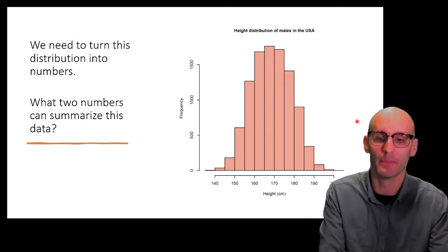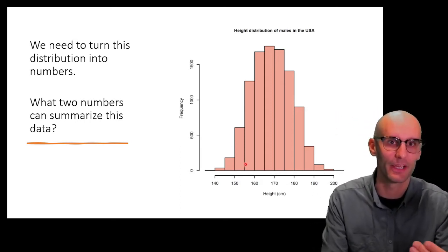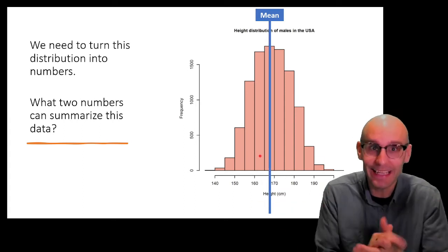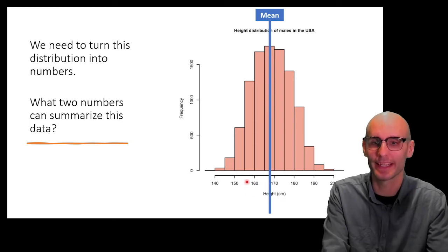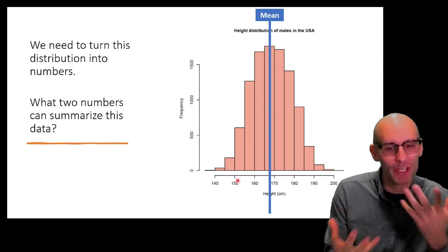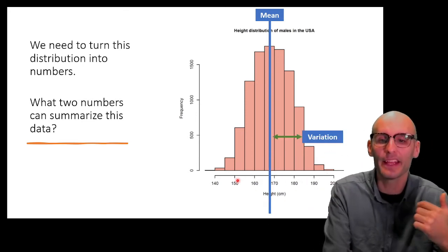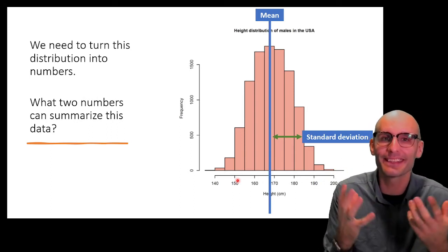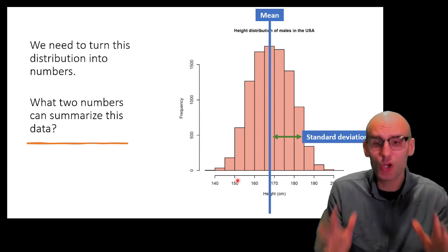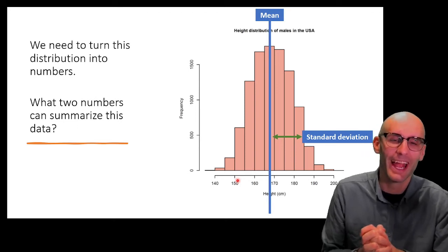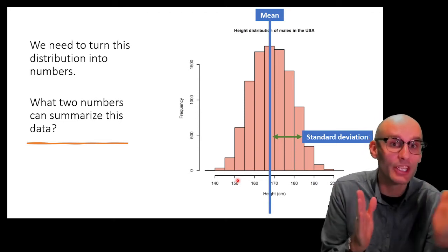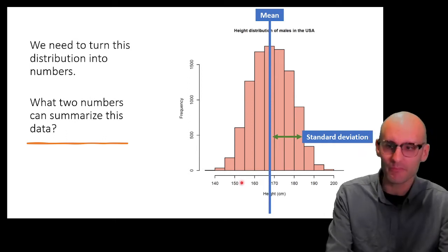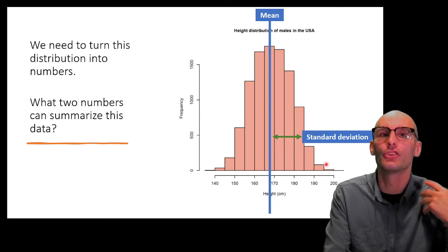What two numbers do we typically use to summarize normal distribution data? The answer is the mean — the average. You sum up all the data, divide by n, and you end up with the average height. But we need something else as well. We need another number to summarize how spread out that data is — that's the variation of the data, or the standard deviation. The standard deviation is a number we use to quantify the variability of a distribution — what's the standard level of deviation away from the mean.